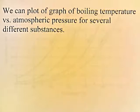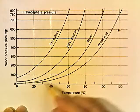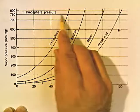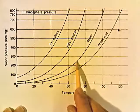We can plot a graph of boiling temperature versus atmospheric pressure for different substances. Here's a graph showing the boiling points of different substances at different pressures. For water, at one atmosphere or 760 millimeters of mercury normal atmospheric pressure, water boils at 100 degrees. But at the top of Mount Everest, where the air pressure is about 250 millimeters of mercury, we go across to the water curve and come back down — water will boil at 70 degrees.